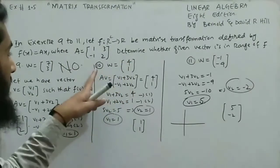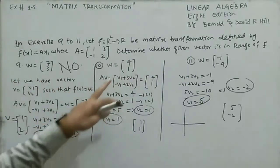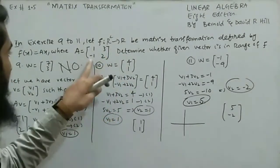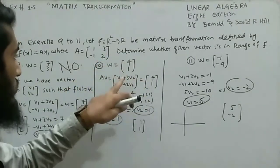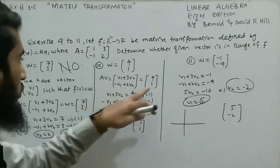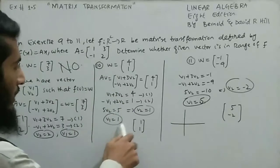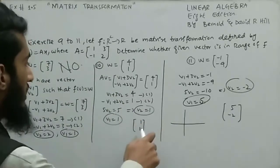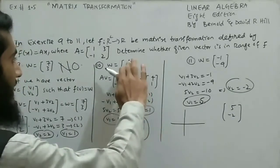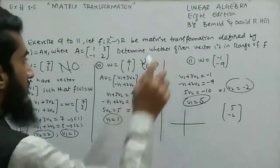For question 10, w = (4,1). Using the same system: v1 + 3v2 = 4 and -v1 + 2v2 = 1. Solving this linear system gives v1 = 1 and v2 = 1. So v = (1,1). Since (1,1) lies in the range corresponding to w = (4,1), the answer is yes.